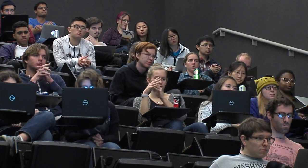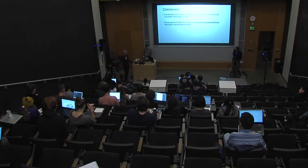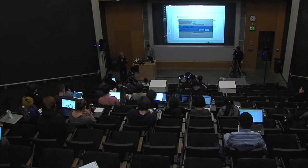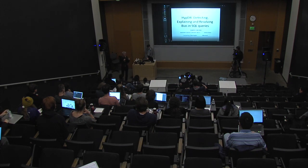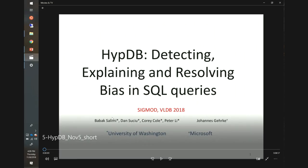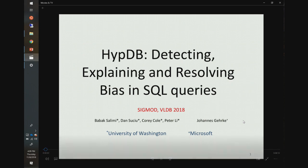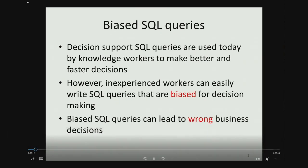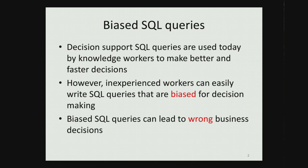Thanks, Jennifer. The next talk is by Babak Salimi. He is in Vancouver waiting for his visa and sent us a video of his talk about how to understand when your queries are not returning what you think, and how to fix them. Hi everyone, I'm Babak. Today I'll be talking about bias in the context of decision support SQL queries. Decision support SQL queries are used by knowledge workers to make better and faster decisions, but inexperienced workers can easily write SQL queries that are biased for decision making unless they are trained as statisticians.